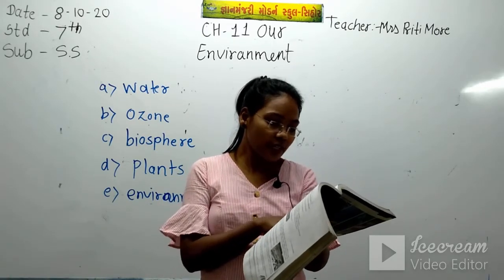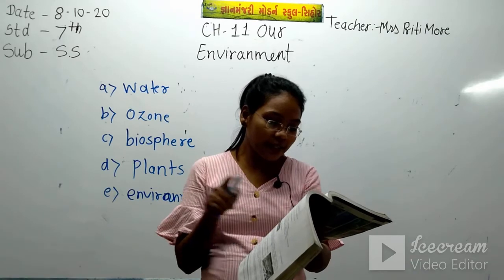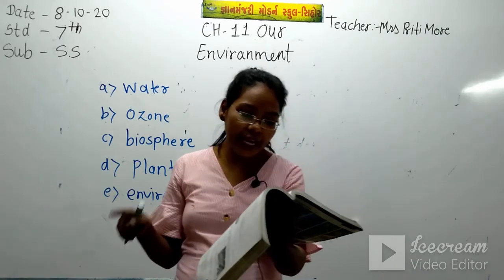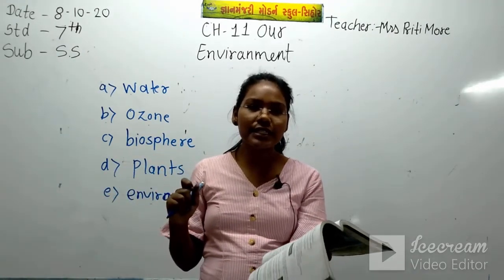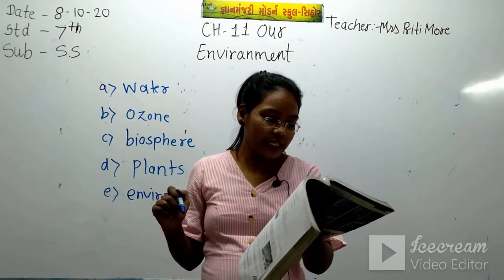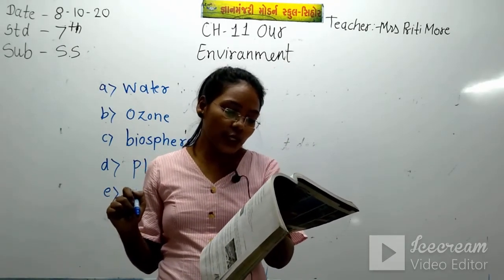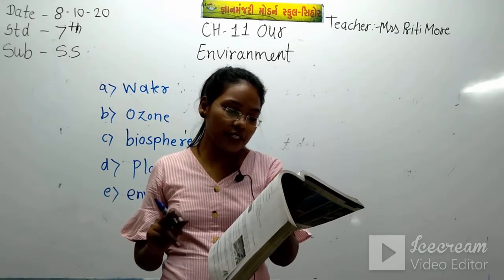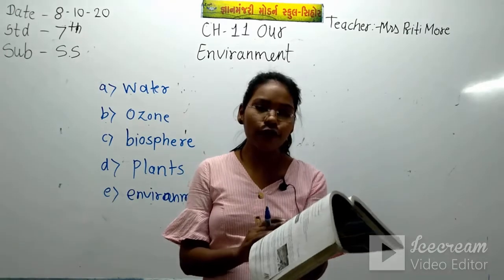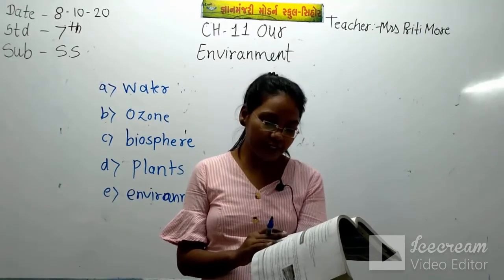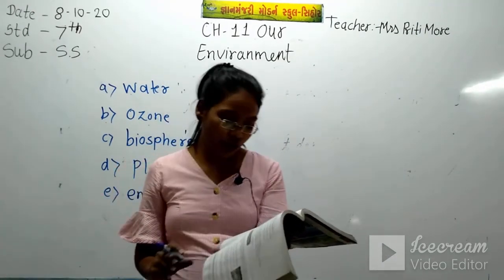One of these is not a heterotroph - cacti, tiger, snake, or elephant. The correct answer is cacti, because cacti is a plant and therefore an autotroph. Human environments include - mountain, river, forest, or factories. The correct answer is factories - option four.